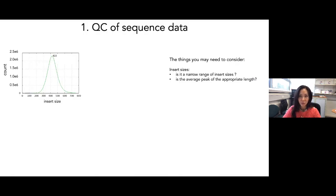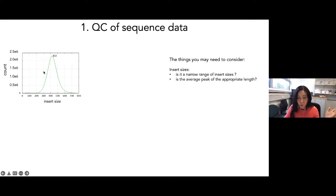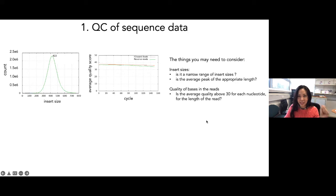Section one: QC of sequence data. Sometimes people don't look at this, but it's useful to understand because weird results can arise from problems at this stage. You want to verify the insert sizes — fragment sizes — are roughly what you expected, ideally peaking above 400 base pairs. You'd be surprised how many companies don't achieve this. The second thing is the quality of the bases in the read, which these days tend to be 150 base pairs.